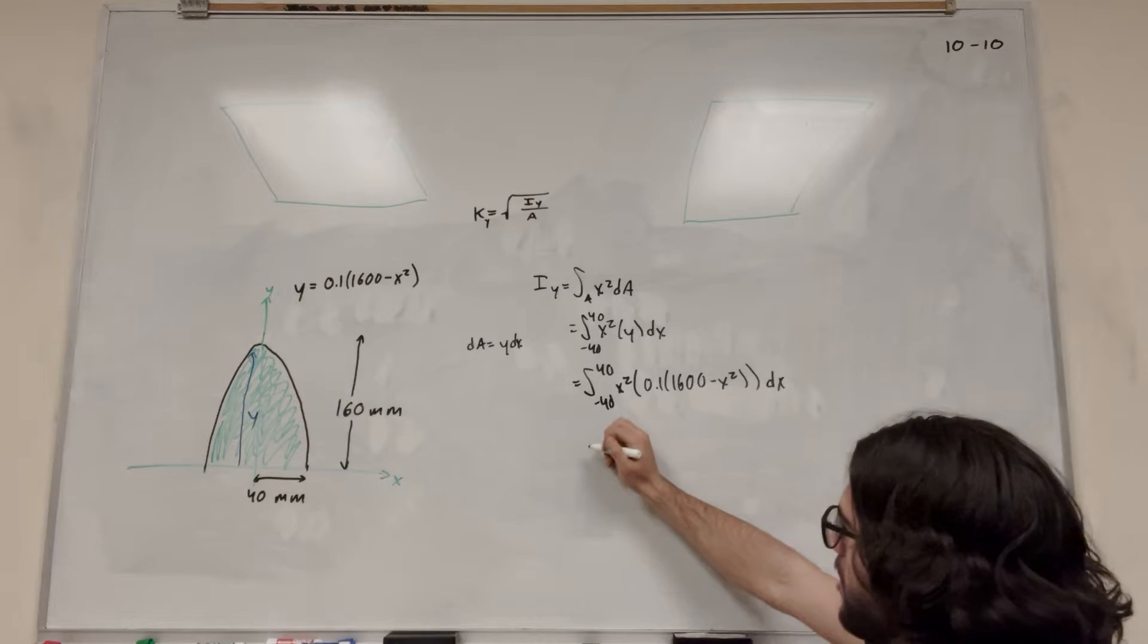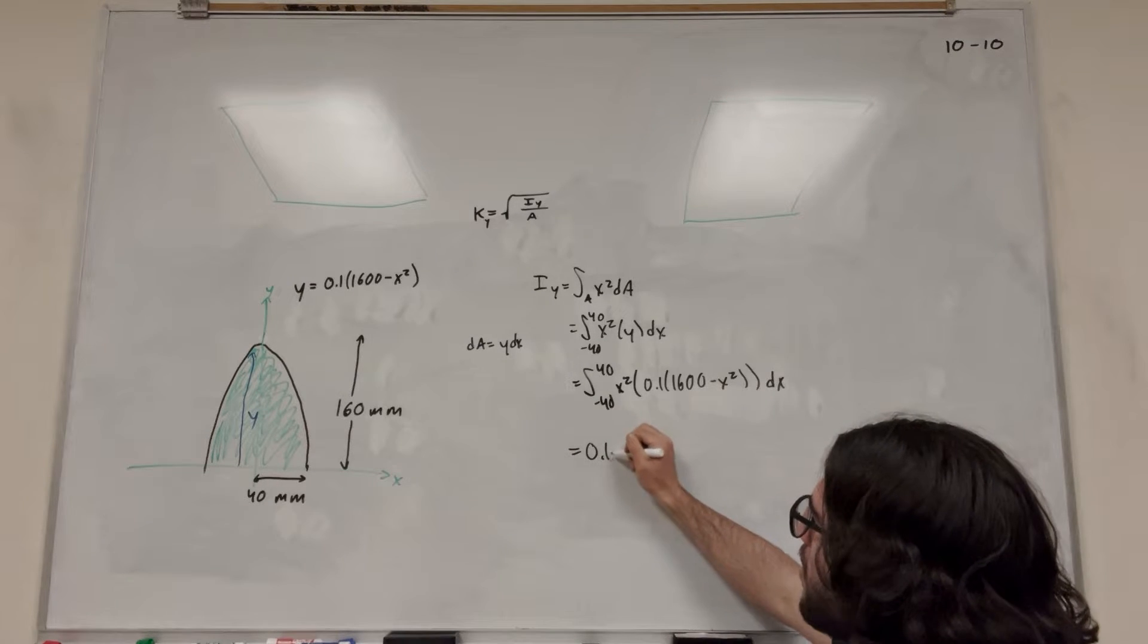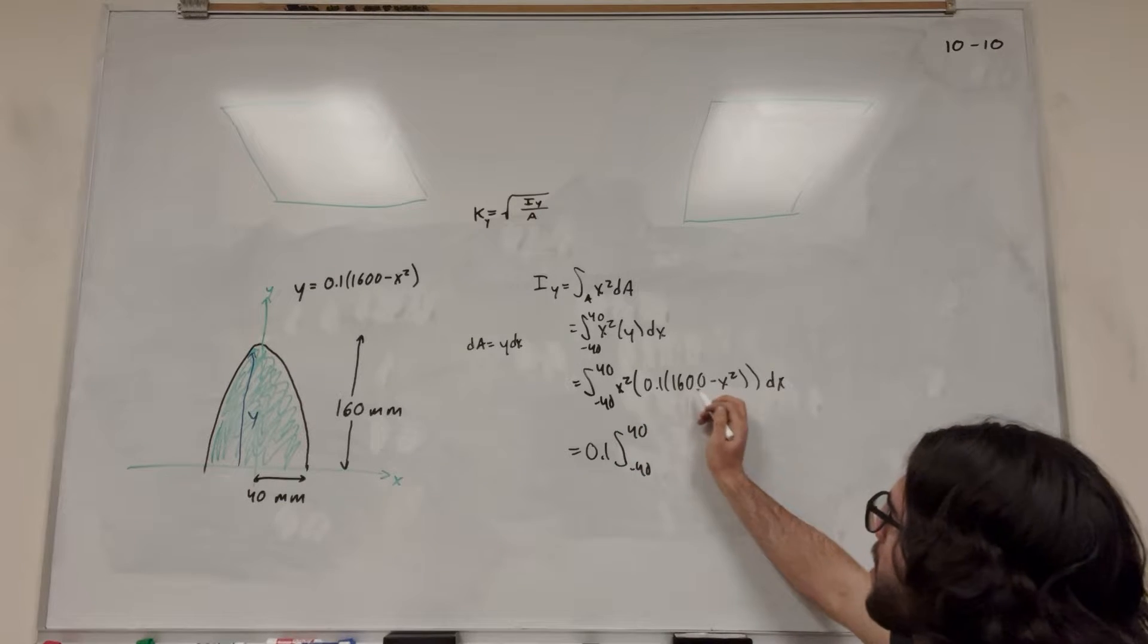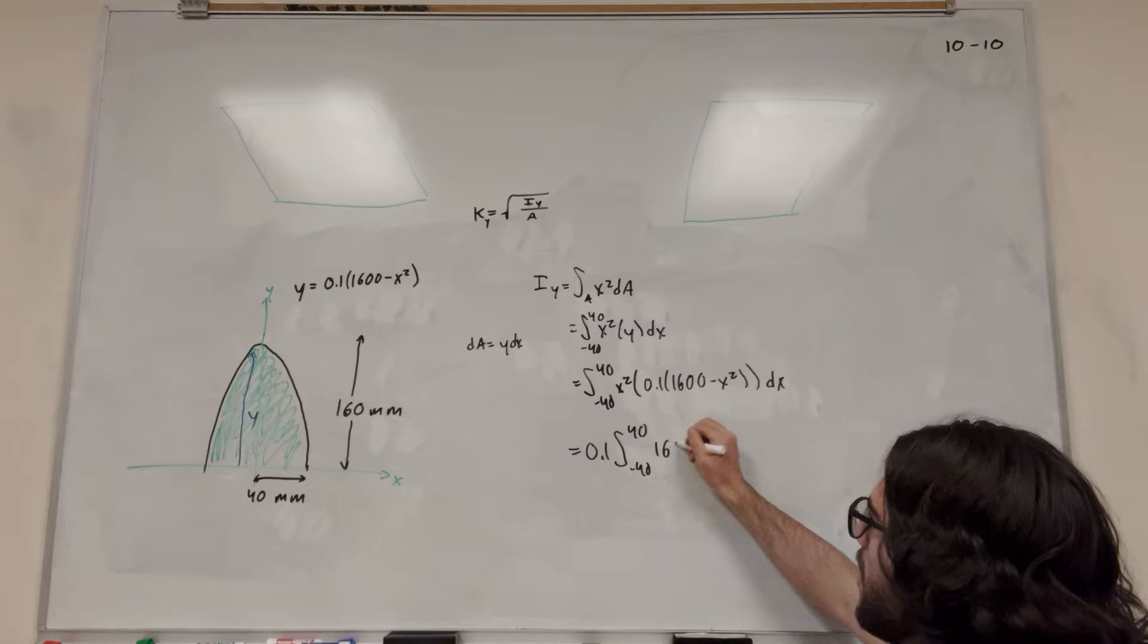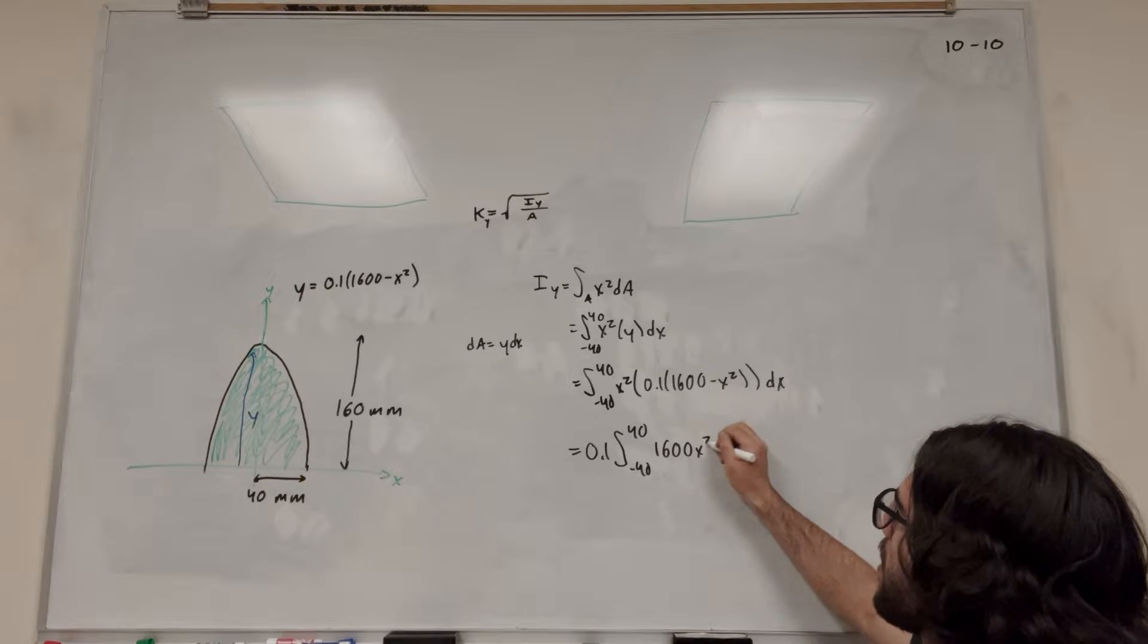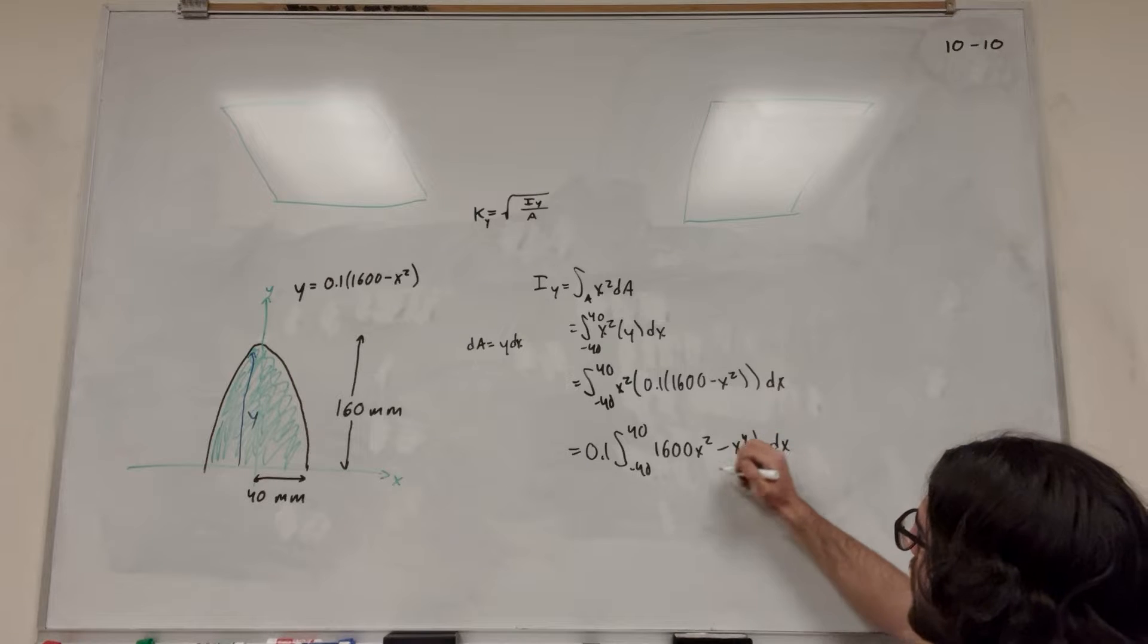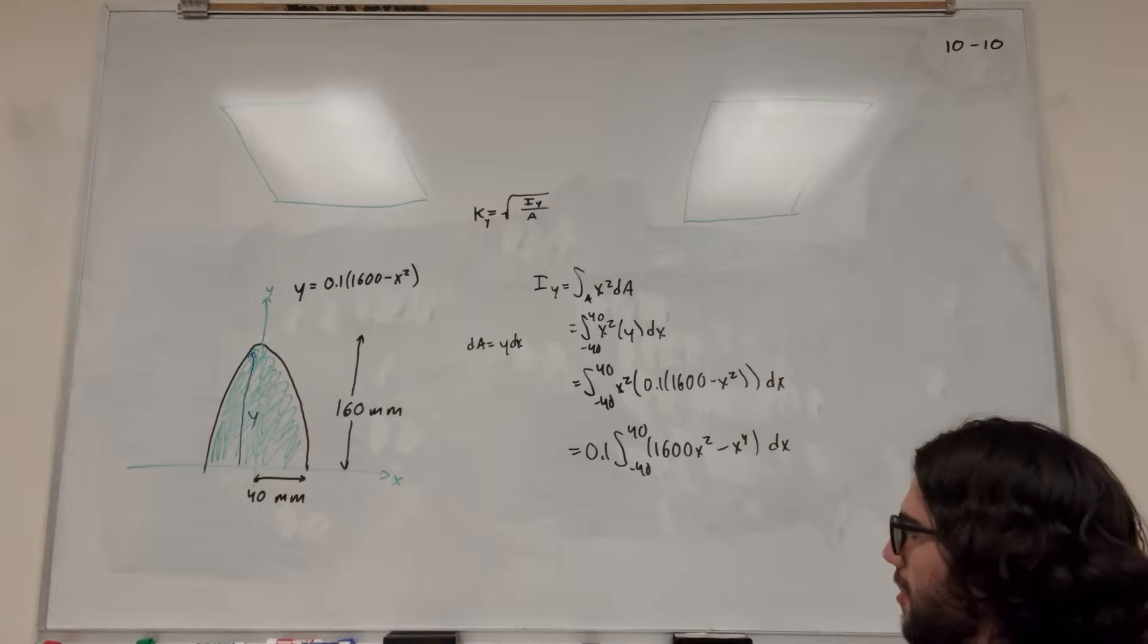So the first thing I'm going to do, I'm going to bring out this 0.1. Negative 40 to 40. And then distribute this x squared. So it's going to be 1,600 x squared, minus x to the 4th dx.